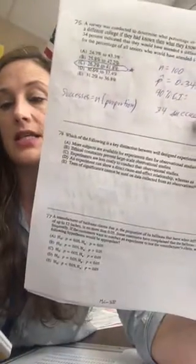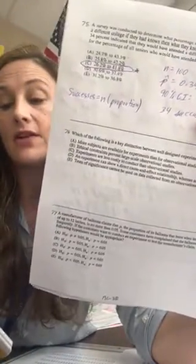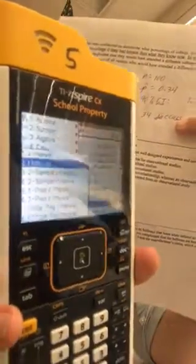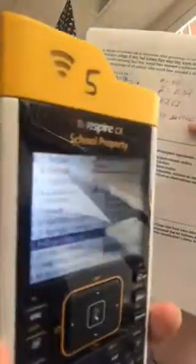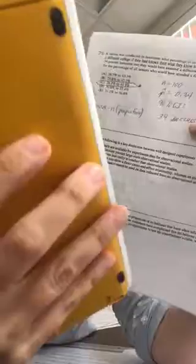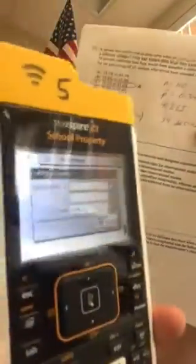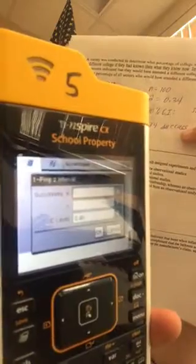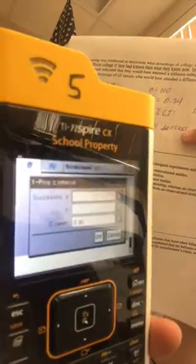We hit menu, statistics, confidence interval, and ask ourselves what kind of confidence interval do we want? Well it's definitely a proportion question so I scroll down to proportion and I only have one set of 100. So I'm going to hit one proportion z test. They've asked me questions like how many successes, how many people I asked, and set the confidence interval.